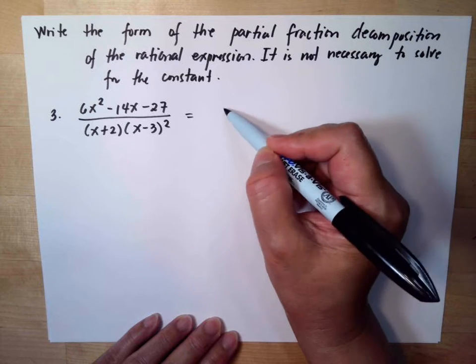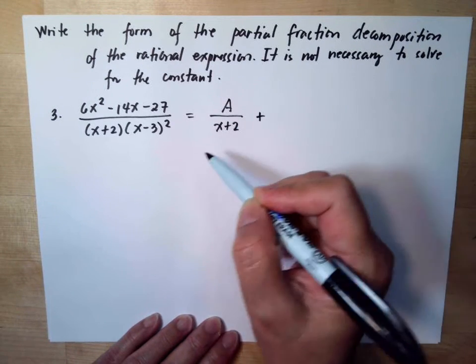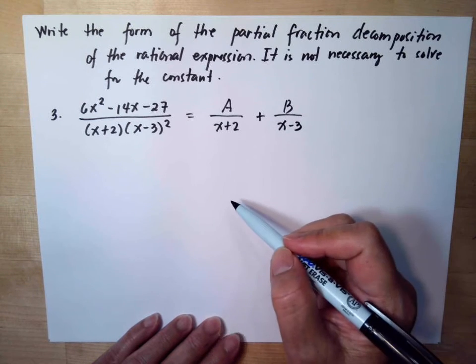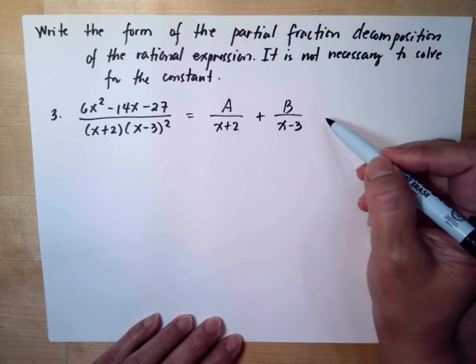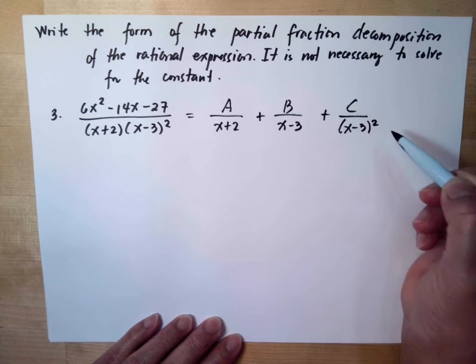The first one you can say it is A over x plus 2. Then the second one we have B over x minus 3. Then we have squared, so you will say C over x minus 3 to the second power.